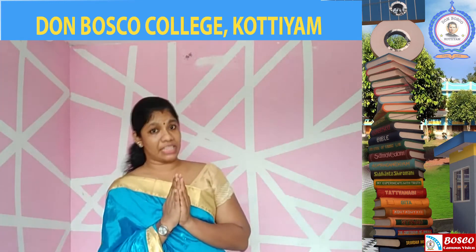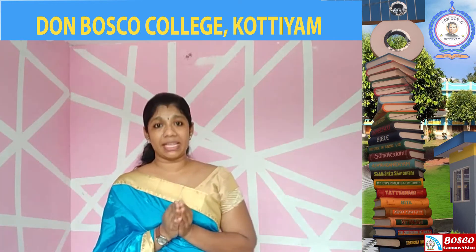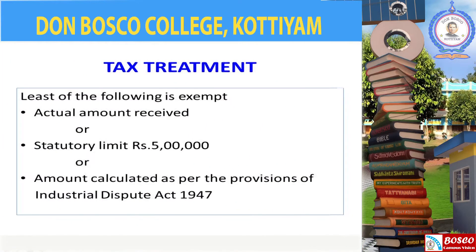The amount of retrenchment compensation is calculated under the Industrial Disputes Act of 1947. The exemption is applied on the least of the following three amounts: number one, the actual amount received; number two, the amount computed under the Industrial Disputes Act of 1947; and number three, the statutory limit of rupees 5 lakhs.